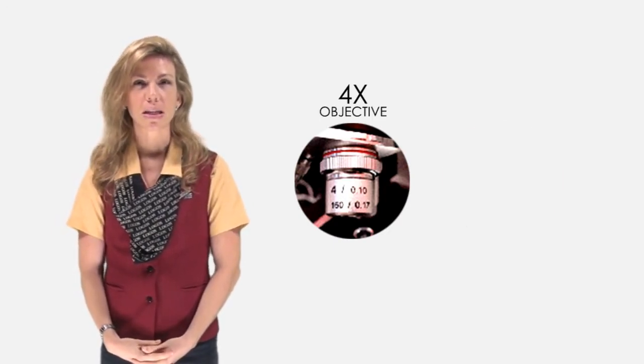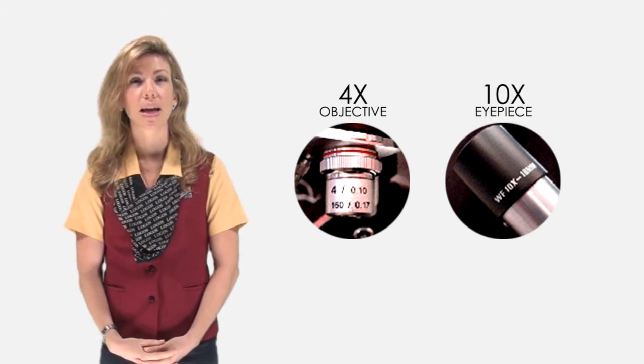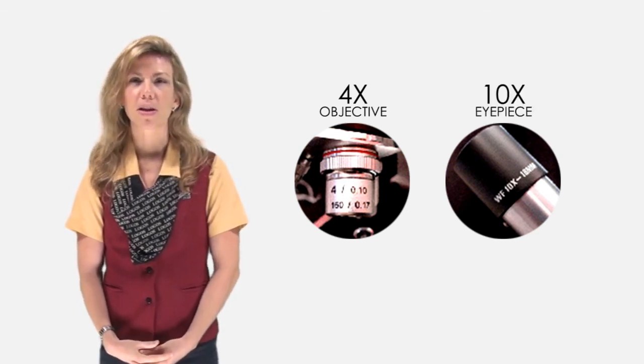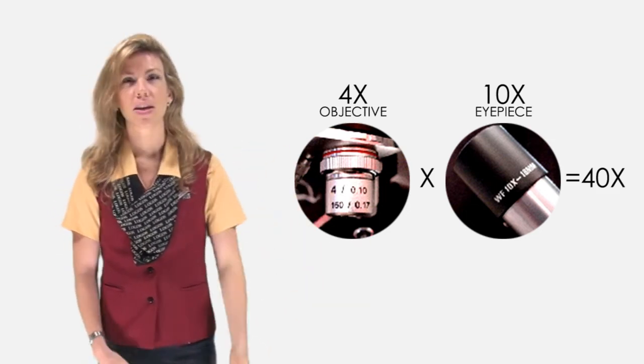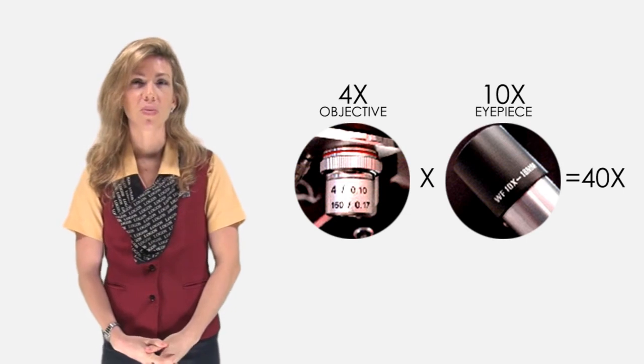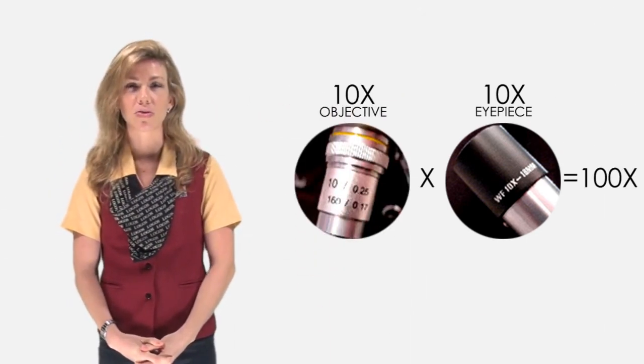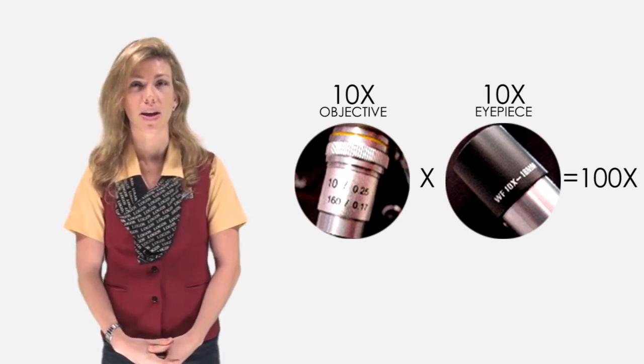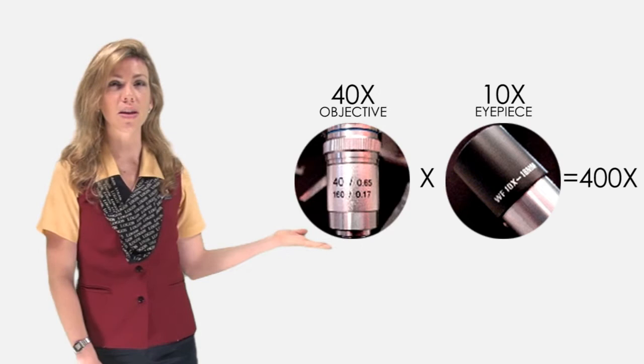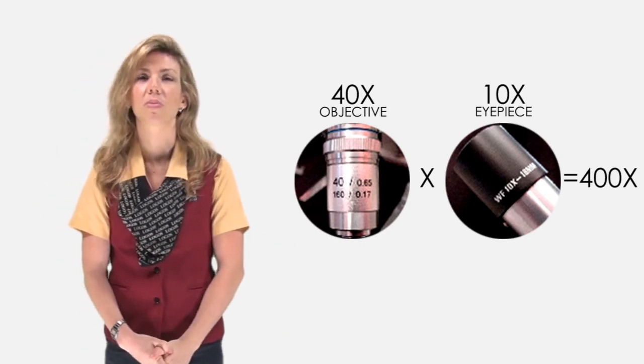To know the total magnification of an object seen through a compound microscope, the magnification of the two individual lenses are multiplied together. For example, if the lower lens magnifies the object four times and the eyepiece lens magnifies the object ten times, the total magnification would be 40 times, or 40x. You can do the same calculation with a magnification of ten in the lower lens or the objective lens. Ten times ten is 100x. And with an objective lens of 40, your total magnification would be 400x.